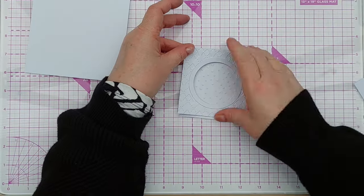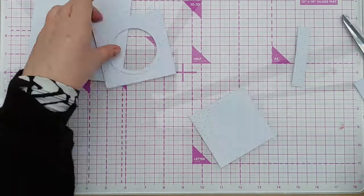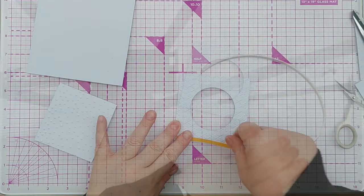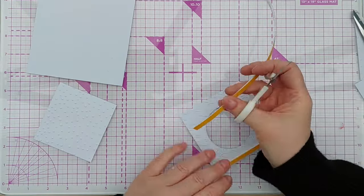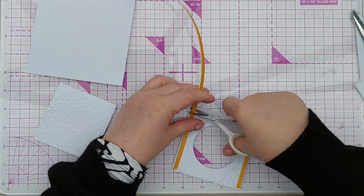So next I cut my dotty panel down to fit behind the aperture and added foam tape to separate the two layers. This added some lovely depth to the card.